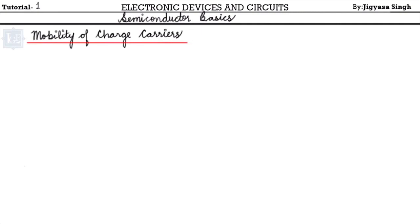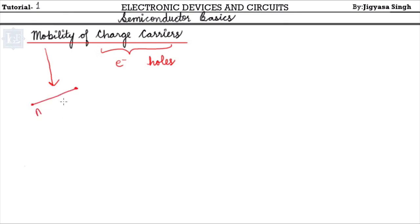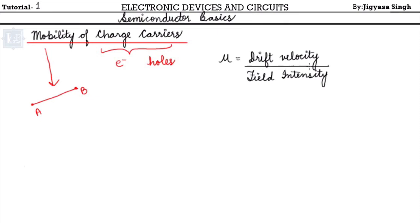The next topic is mobility of charge carriers. Charge carriers are either electrons or holes. Mobility denotes how fast a charge carrier moves from one place to another. The formula is: mobility = drift velocity / field intensity, giving units of meter² per volt-second. Note that drift velocity is always greater than normal velocity because the carriers are being drifted.